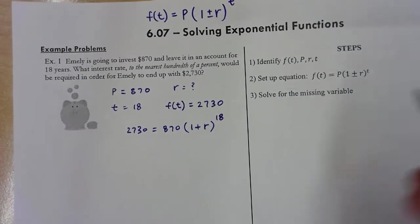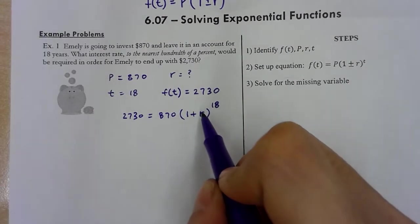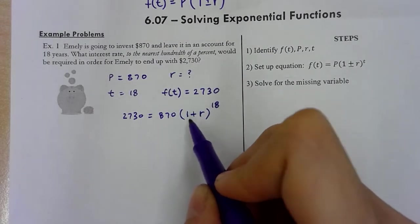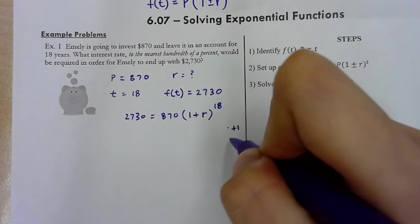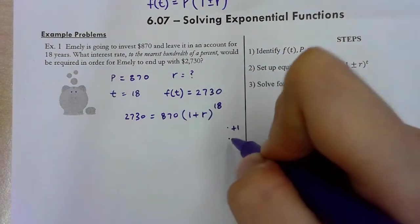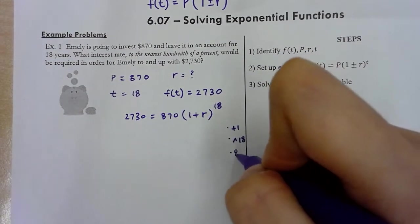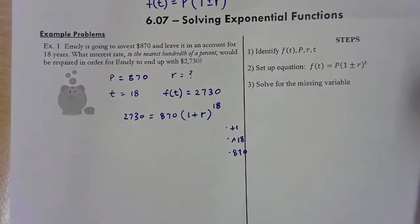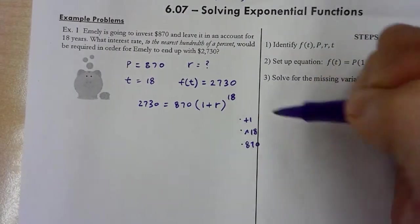Now here, we're going to identify the operations done to r first. So first step, we're going to have to add 1. And then second step is, after I add 1, I'm going to raise it to 18th power. And then last step is, multiply by 870, right? So we're going to go backwards, undoing each one of them.